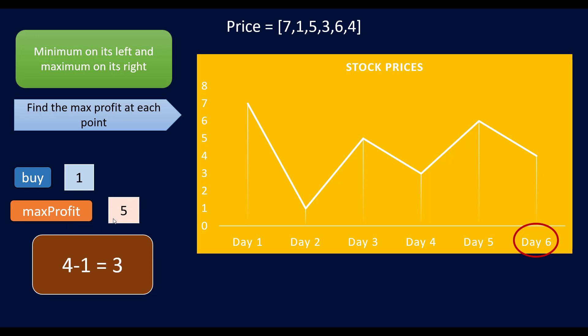In this approach we simply have variables for the buy price and the max profit. We try to sell the stock on each ith day and maximize the profit by updating the buy price. The space complexity is now O(1) and this is a single-pass solution — we do not need to iterate over the array again.